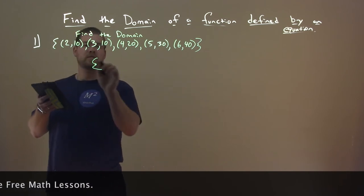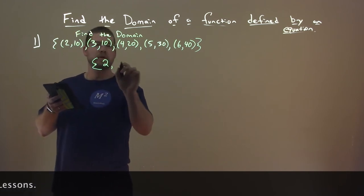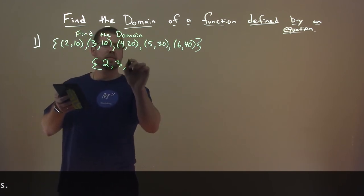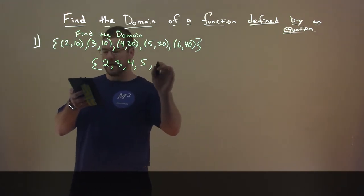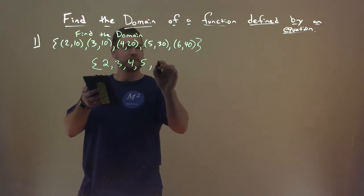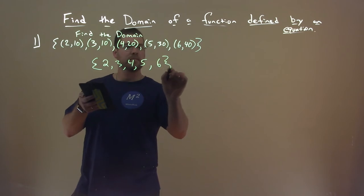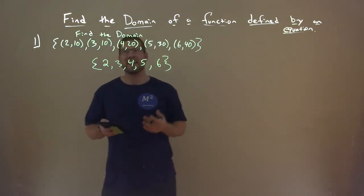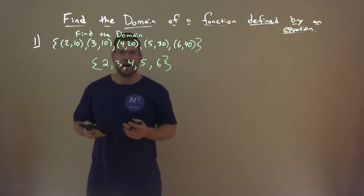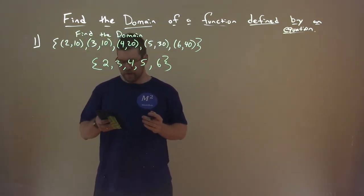The X values are 2, 3, 4, 5, and 6. That is our domain — the set of the X values. Not too difficult.